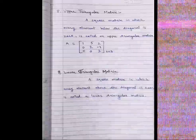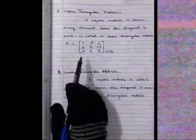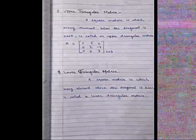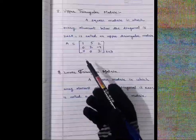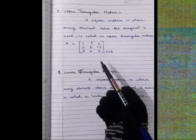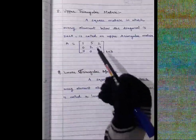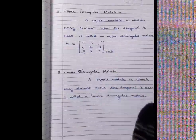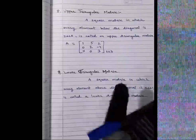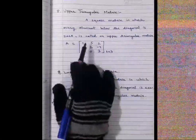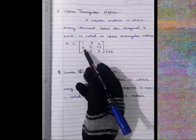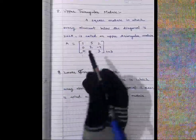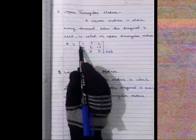In an upper triangular matrix, above the diagonal and on the diagonal we may take any elements (including zeros for some). However, the elements below the diagonal must always be zero — no non-zero constants are allowed there.